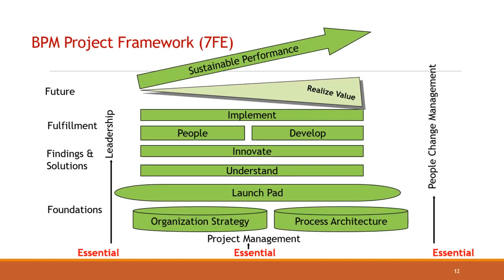The BPM project framework enables the modeling, design, execution, and maintenance of business activities and employees across different departments and physical locations. It is based on the 7FE framework, consisting of four F's — Foundations, Findings and Solutions, Fulfillment, and Future — and three E's (Essentials): Leadership, Project Management, and People Change Management. The foundation includes organizational strategy and process architecture, where the organizational strategy such as vision, strategic goals, and executive drivers are clearly understood by the project team.